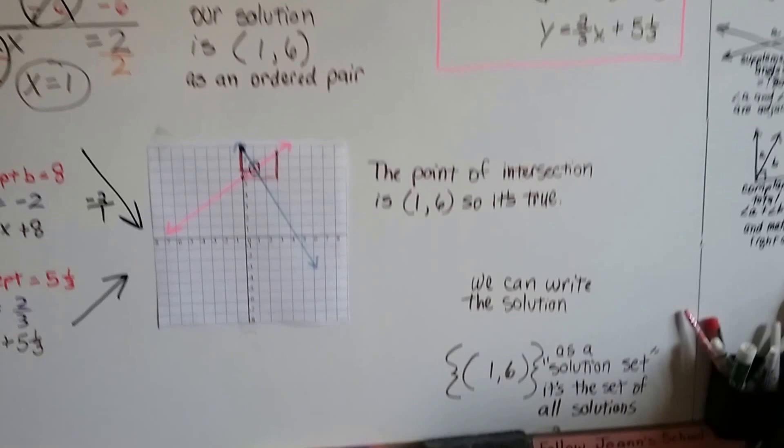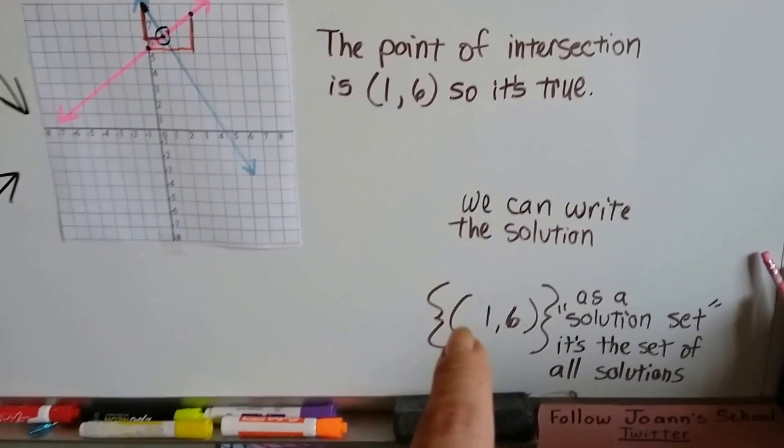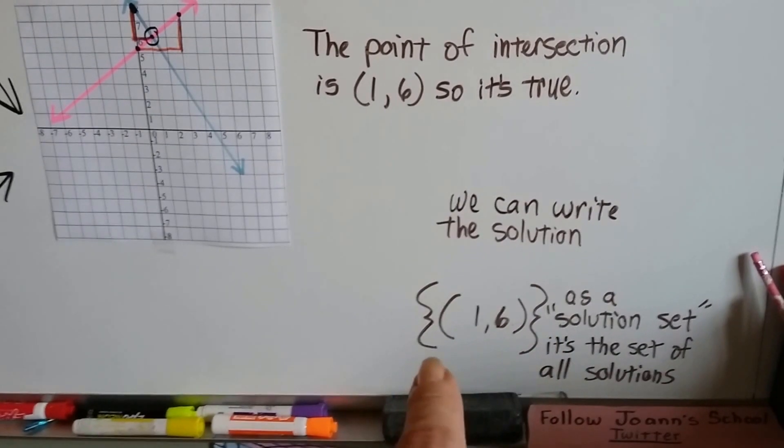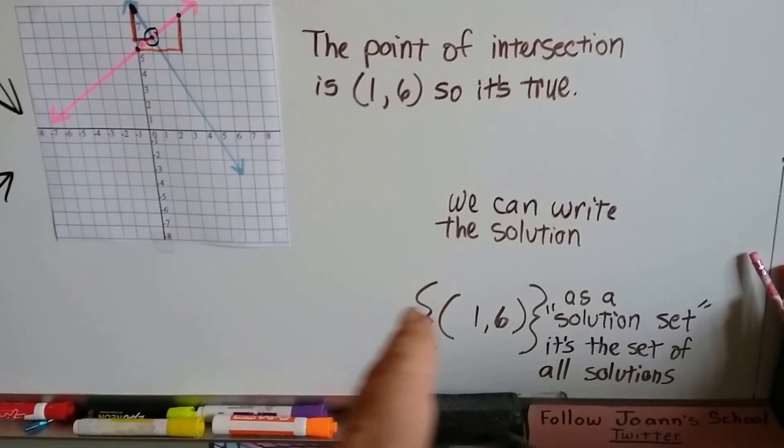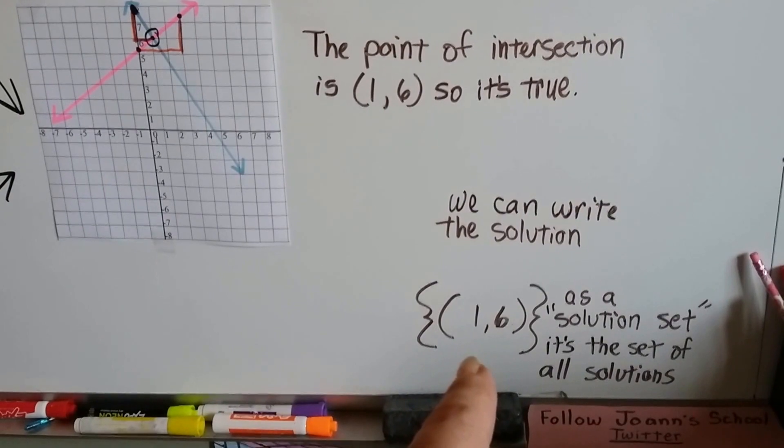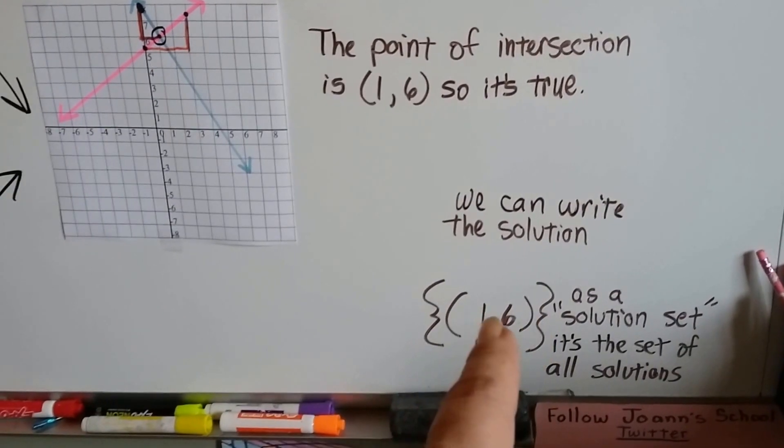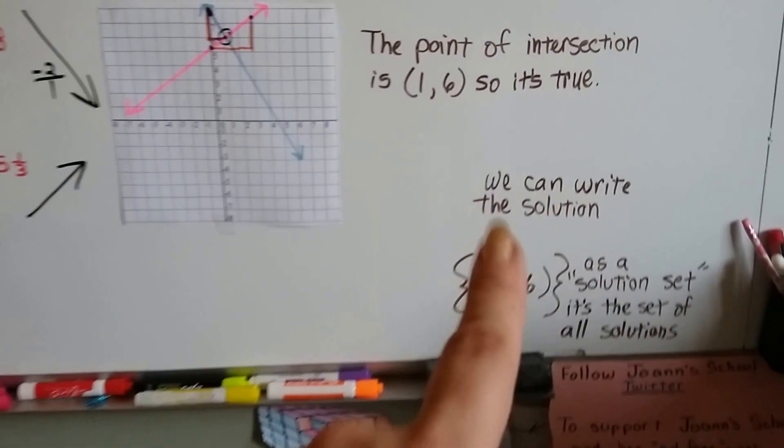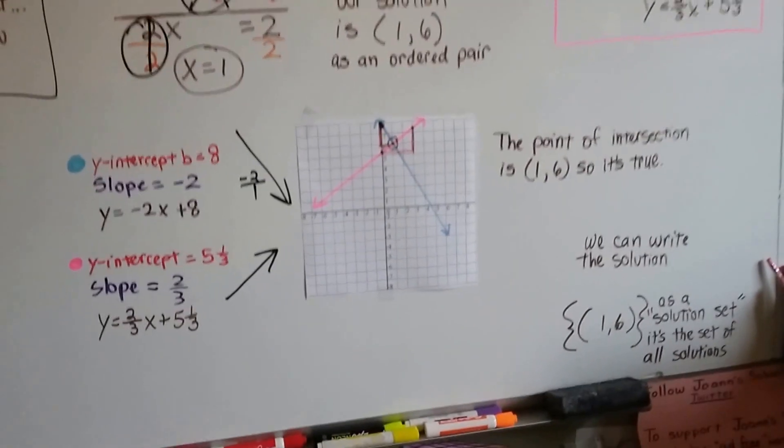Now remember, some of you are already writing your answers as solution sets. When you put them inside of the set brackets, that means it's a solution set. It's the set of all solutions. So it's inside parentheses, and then inside the solution set like that. If you're not doing that yet, you will be soon. So now you know what it looks like.